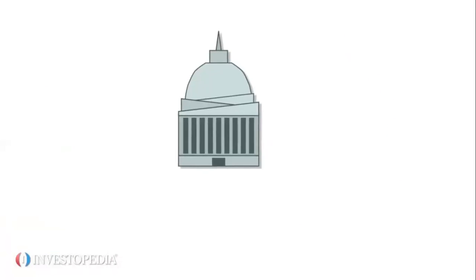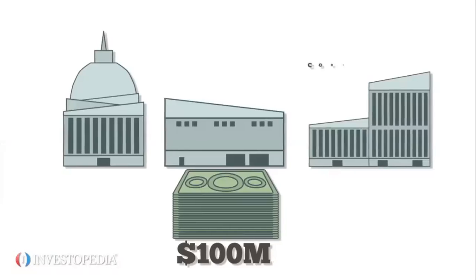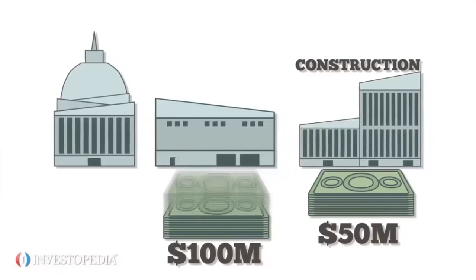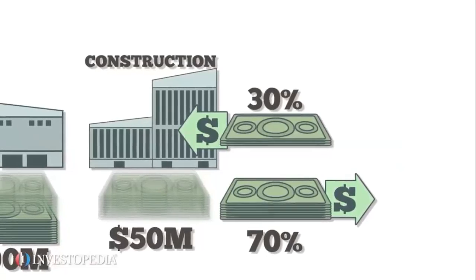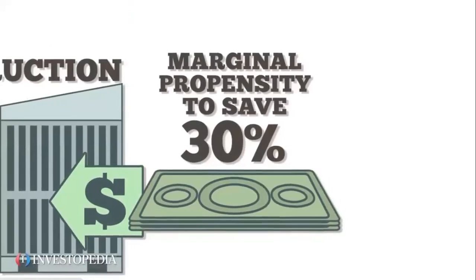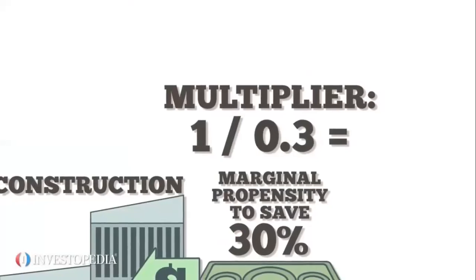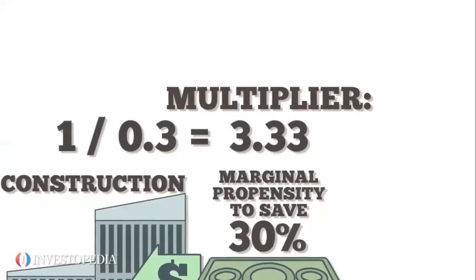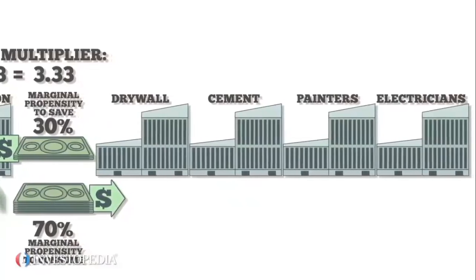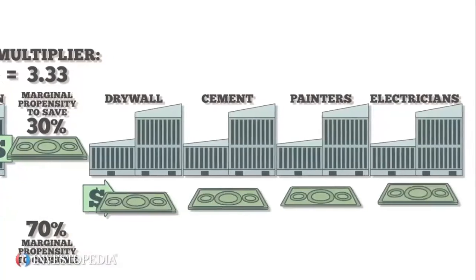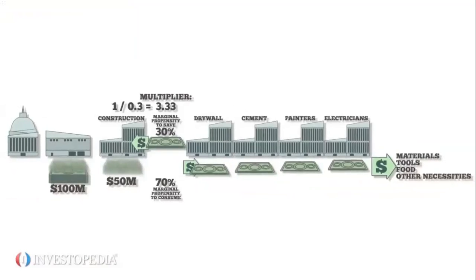Suppose a state government builds a new school with a $100 million budget. Building the school requires hiring a construction firm to coordinate the project for $50 million. The construction firm spends 70% of its fee and saves 30% — those numbers represent the marginal propensity to consume and the marginal propensity to save. To find the multiplier, divide 1 by the marginal propensity to save; in this case the multiplier is 3.33. The construction firm works with companies that hang drywall, pour cement, painters, electricians, and so on. These vendors in turn spend some of their income on materials, tools, food, and other necessities, and the cycle continues.